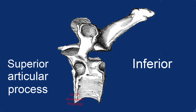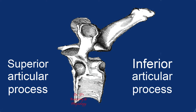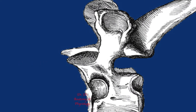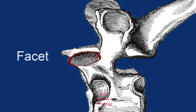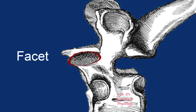The ones extending inferiorly are referred to as the inferior articular processes. If we take a closer look at the superior articular process of this thoracic vertebra, we can note that on this process there is a smooth surface — relatively flat. This flat, smooth surface is what is referred to as a facet. The word facet means little face, and it indicates a place where a movable articulation was present, where the surface of bone can slide against the surface of another bone, requiring smooth, frictionless movement.